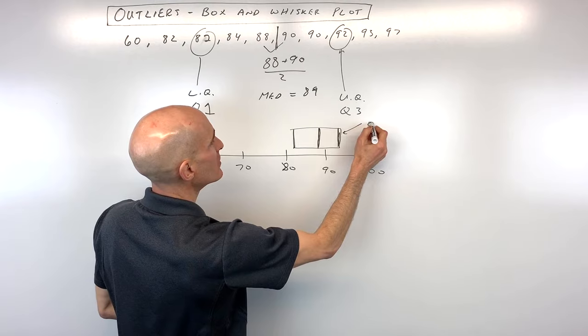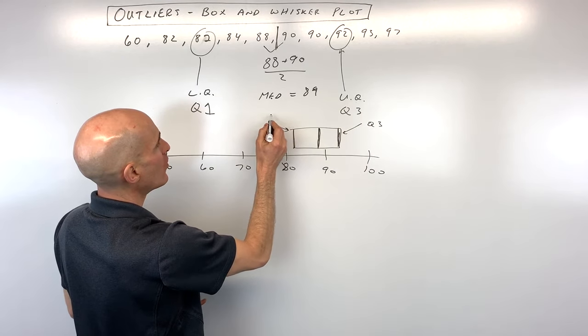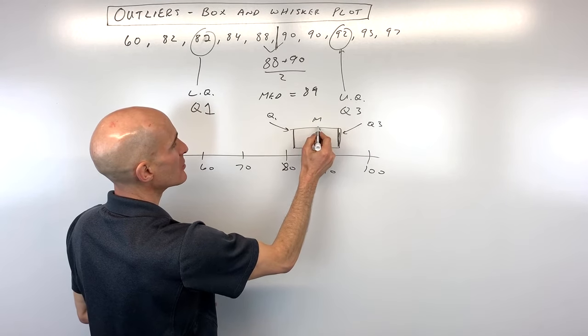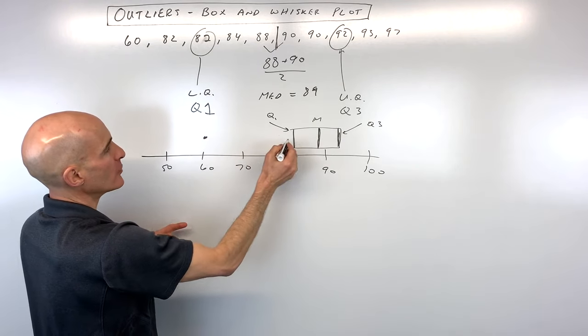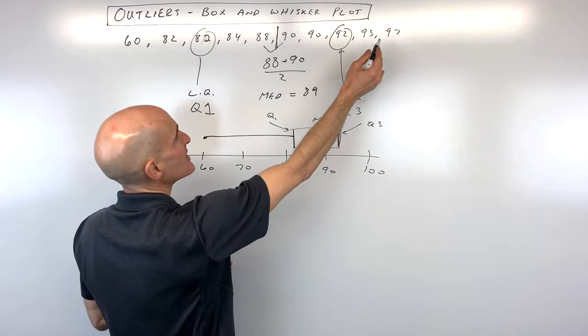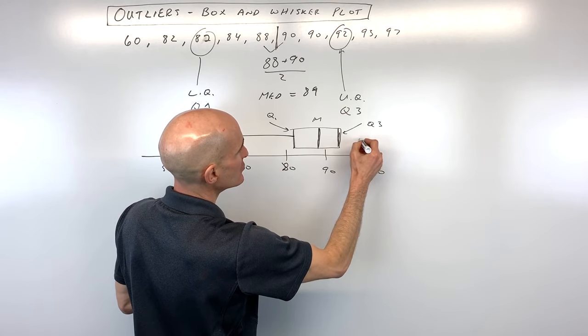Okay, so this is Q3 here. This is Q1 here. This is our median here in the middle. And then we've got our whiskers. So 60 is our minimum. That's our lowest value. And then we have our maximum, which is 97. So 97, just a little shy of 100.